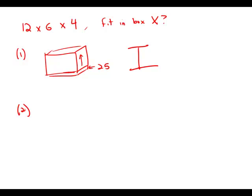Statement number two gives us the dimensions of box X: 60 by 30 by 20. If we know the size of box X, we can calculate exactly how many of the small boxes will fit inside of it. This is completely sufficient and allows us to answer our question.